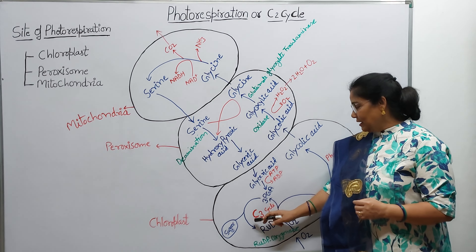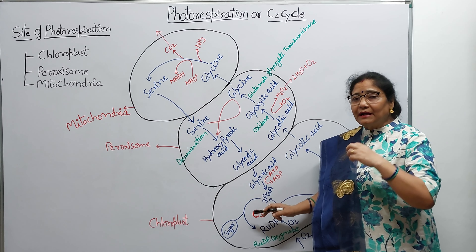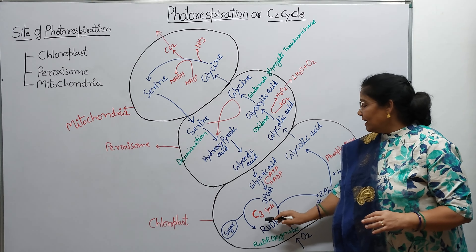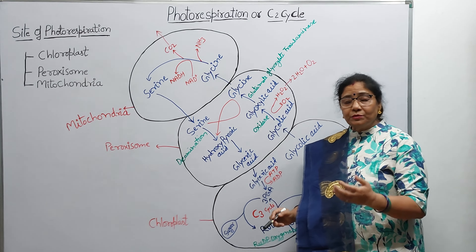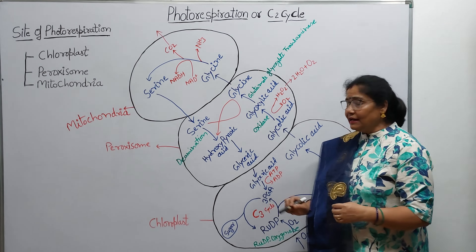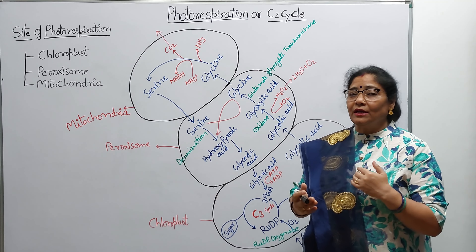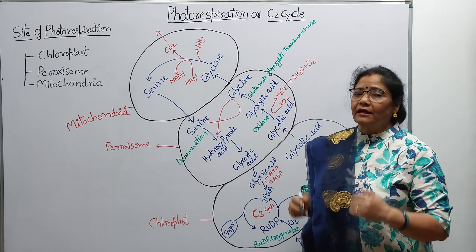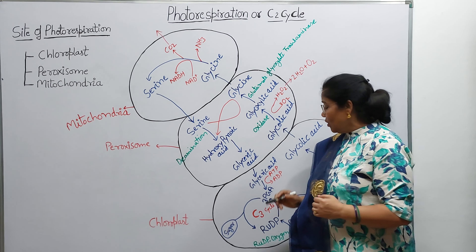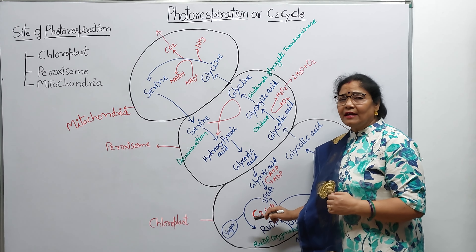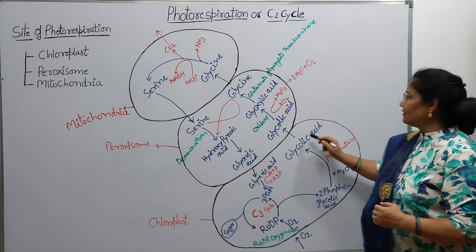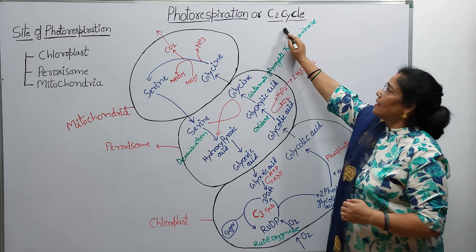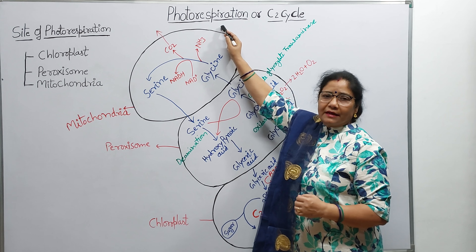Jitne bhi paude hote hain, jab carbon dioxide ka fixation karte hain, adhiktar paude C3 cycle karte hain. Kuch C3 plants mein C3 cycle ke saath ek extra cycle bhi chalti hai, aur is extra cycle ka naam hai C2 cycle — yahi photorespiration hai.